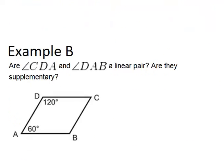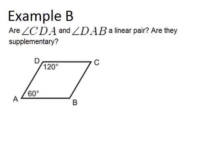Looking at the next example, example B, it says, are angle CDA and angle DAB a linear pair? Are they supplementary? So let's find those angles in the diagram. Angle CDA is this angle right here, and it's marked as 120 degrees. Angle DAB is this angle right here, and it's marked as 60 degrees.